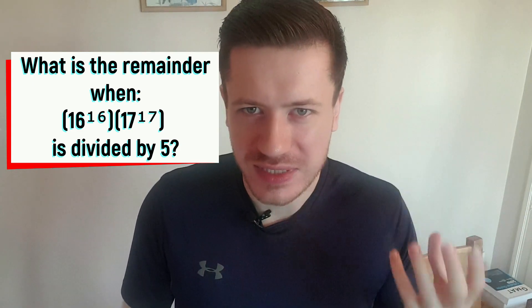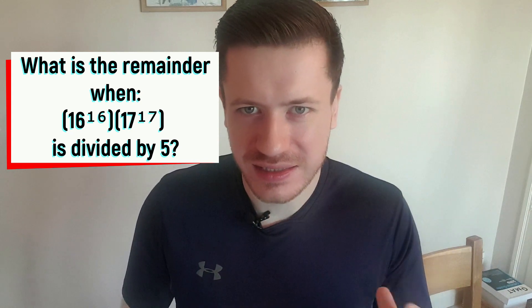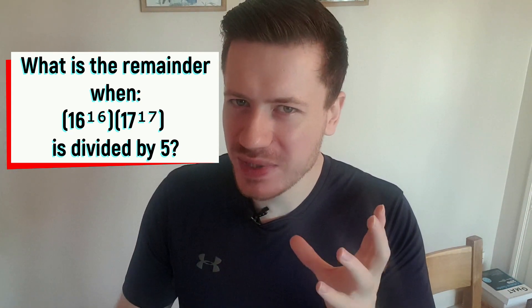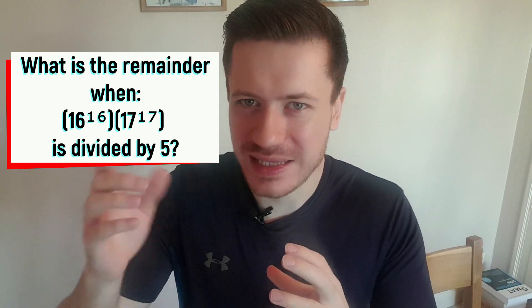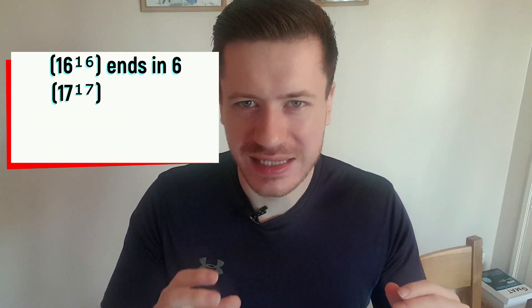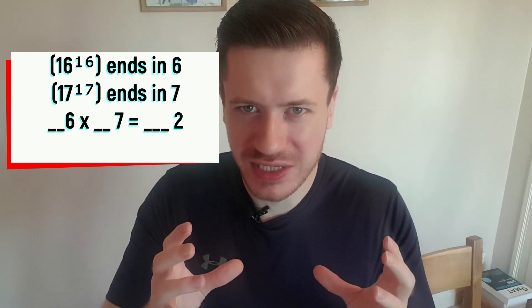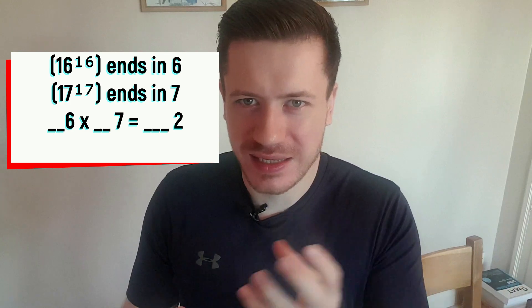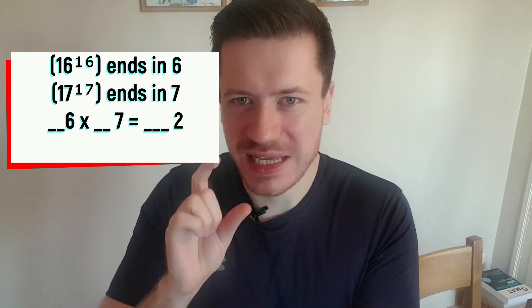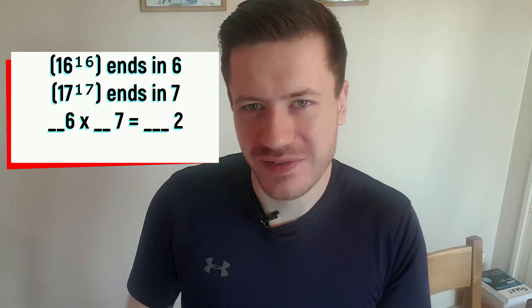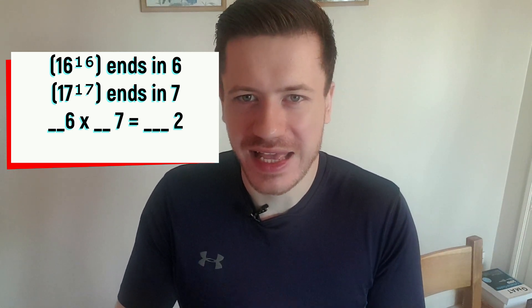Bringing this all together, we know 16 to the power of 16 ends in a six, and 17 to the power of 17 ends in a seven, which, by the way, is a coincidence. Don't think that it always ends in the number that the number itself ends in. And finally, we do six times seven to see what the overall multiplication ends in. Six times seven is 42, which ends in a two. So we can confidently say that 16 to the power of 16 times 17 to the power of 17 ends in a two.